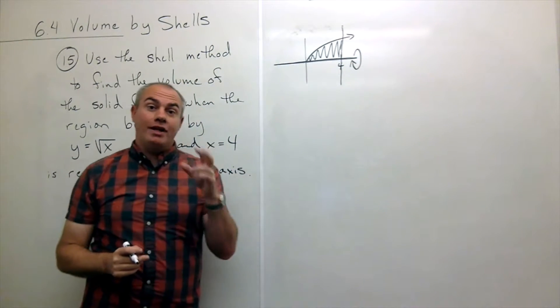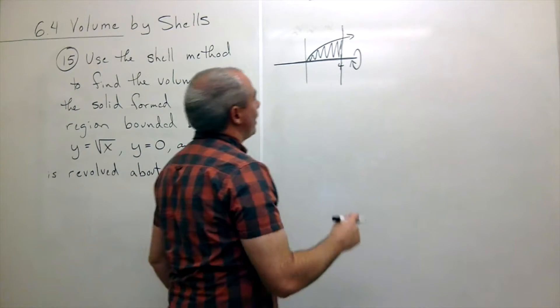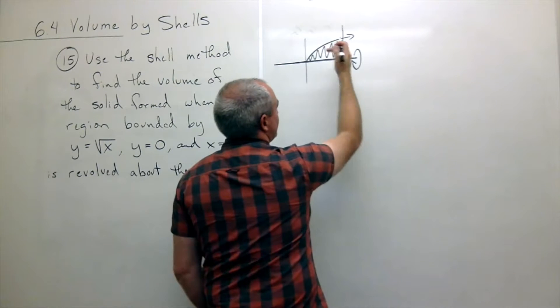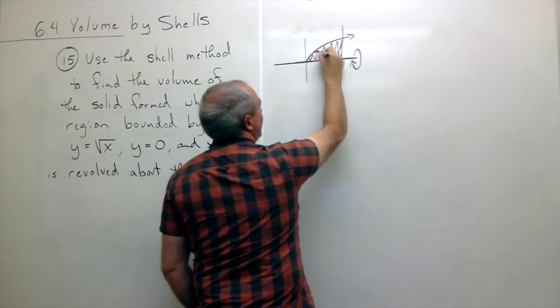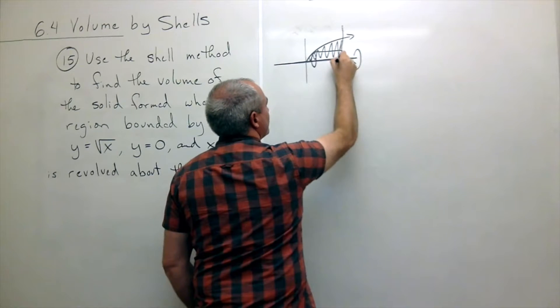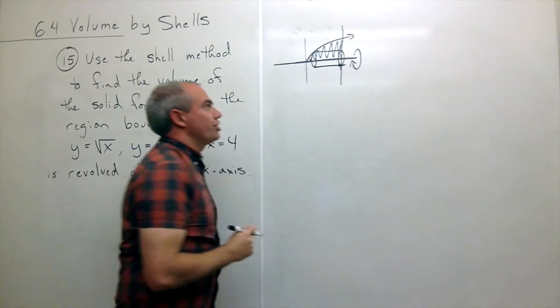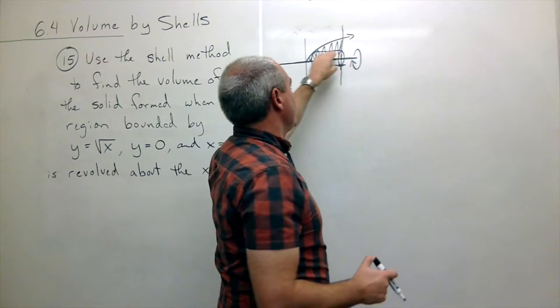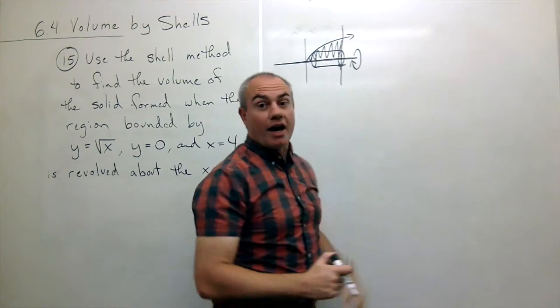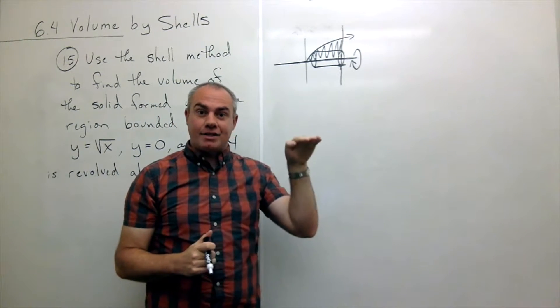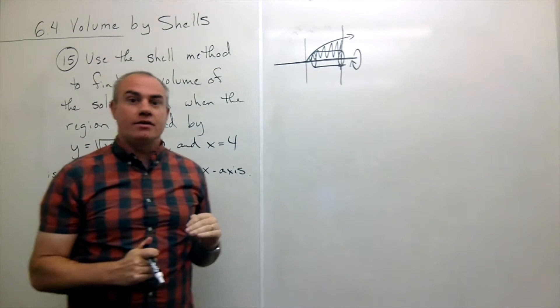Okay, if I want to use shells on this thing then I have to think about how am I going to revolve a piece of this thing to get a shell? And I'd have to take a horizontal line and revolve that horizontal line and then I get a shell. Well, if I'm taking a horizontal line then what I'm doing is when I chop this thing up, I'm actually chopping up the y-axis, not the x-axis.